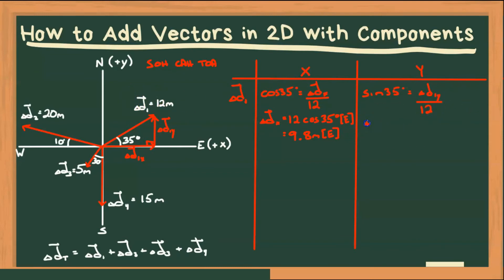And the direction is up, pointing north. So that's going to be north. We plug that into our calculators, and we get 6.9 meters north.